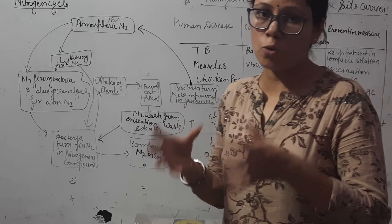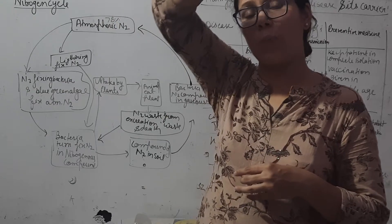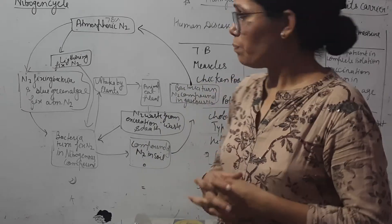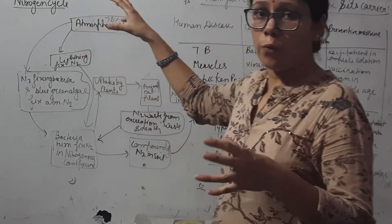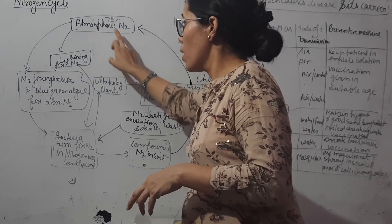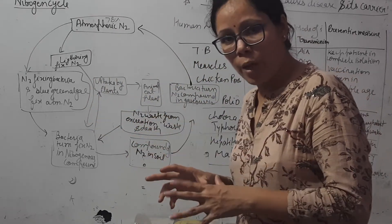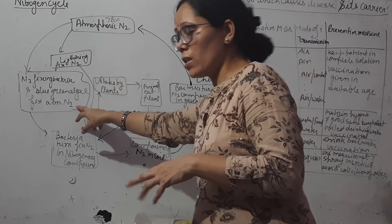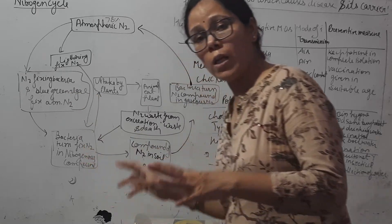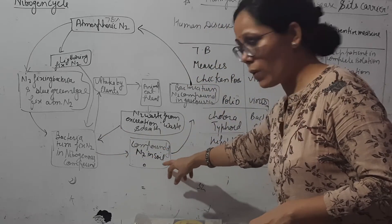These nitrogenous compounds mix into the soil, increasing soil fertility, and then the nitrogen goes back into the environment — this cycle continuously runs. 78 percent of nitrogen is available in the atmosphere. This atmospheric nitrogen is fixed by Rhizobium bacteria and blue-green algae.